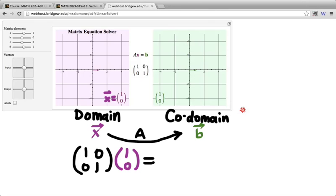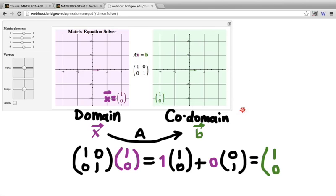So using our linear combination formalism, this is 1 times the first column of that matrix plus 0 times the second column. And so sure enough, what we get on the right-hand side is 1, 0, and that's what we're going to call our b here.